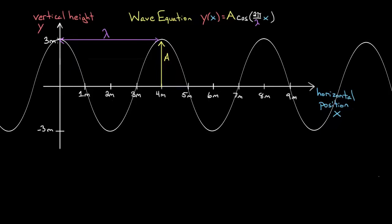That way, if I start at x equals zero, cosine starts at a maximum and I would get three. If I say that x has gone all the way to one wavelength — in this case four meters — once I plug in wavelength for x, that wavelength cancels the wavelength in the denominator. We'd get two pi, and this cosine would reset, because once the total inside becomes two pi, the cosine resets. That's what happens for this wave — it resets after every wavelength.